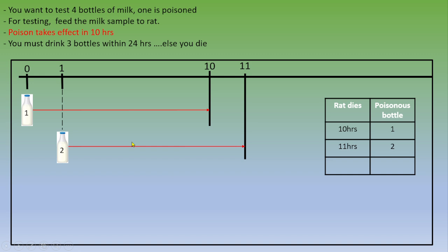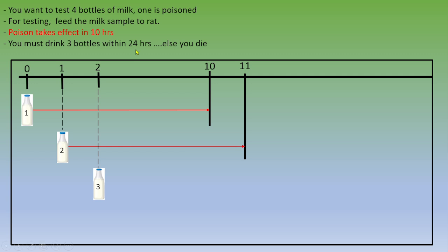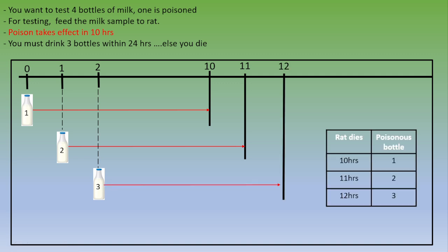Then the poison is on bottle three or four. Then you do that for bottle three. This is exactly the same process. After two hours, you test bottle three, and 10 hours later, this is hour 12.